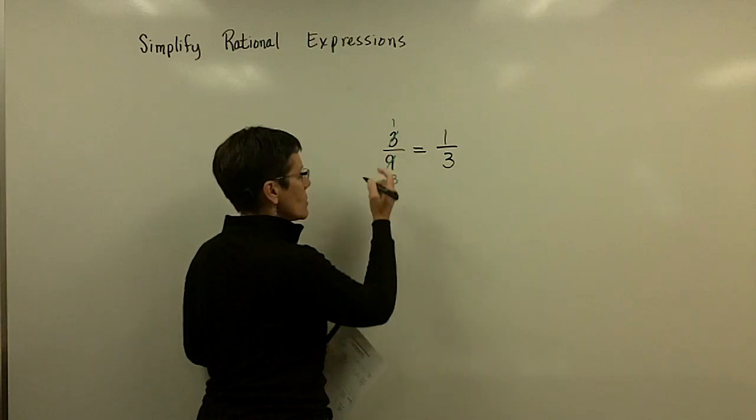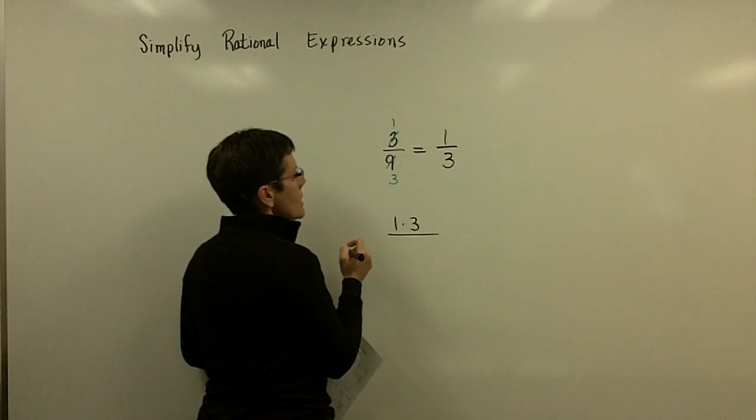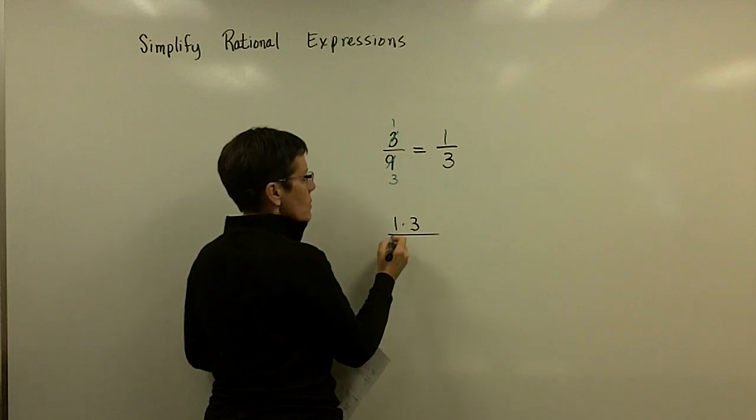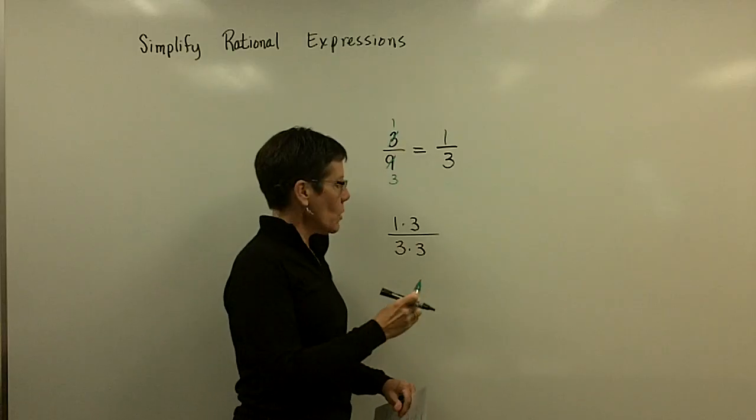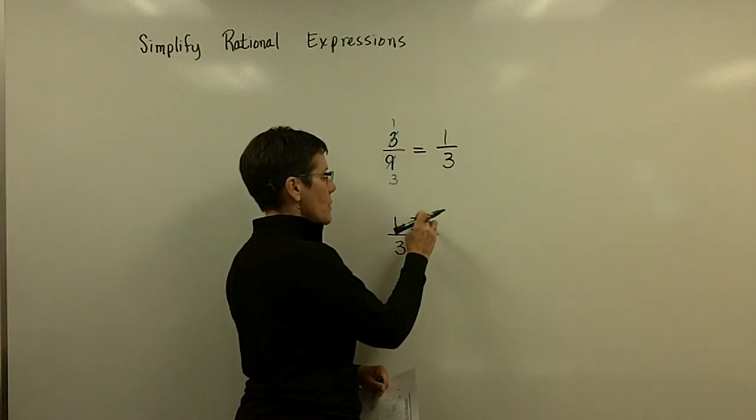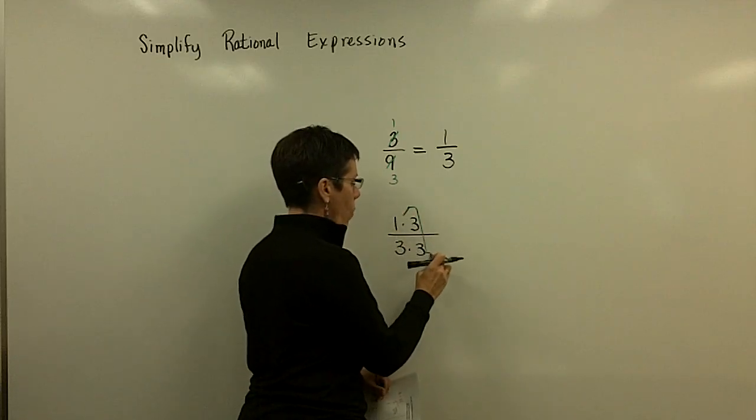But another way to think about that is to write these as their prime factors. Now 3 is a prime number, so I don't necessarily need to do this. But the number 9 is written as 3 times 3. And so what I'm going to do here, what I really have done up here in the shortcut process, is I've removed the number 1.